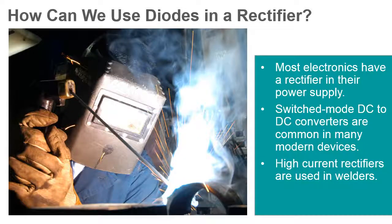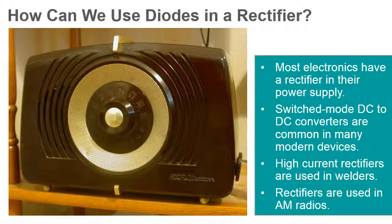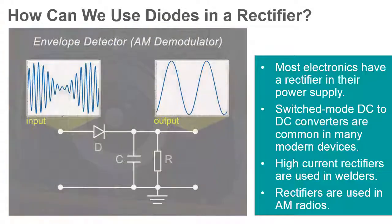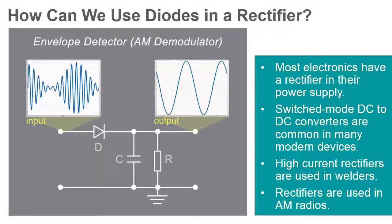Rectifiers are used to supply the direct current required by electric welders. Rectifiers are also used for the detection of amplitude-modulated, or AM, radio signals.